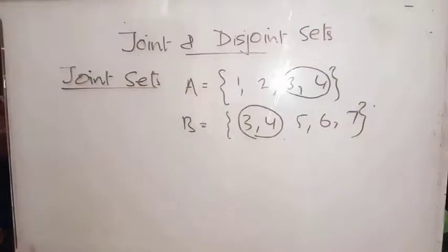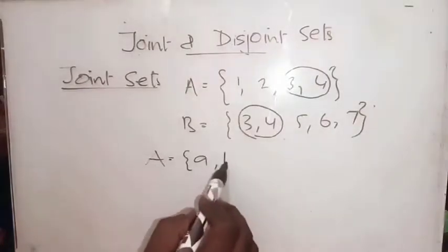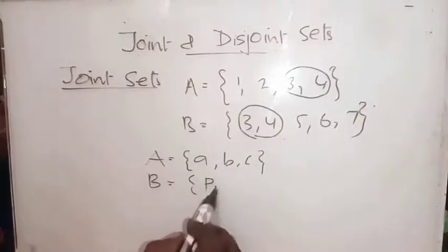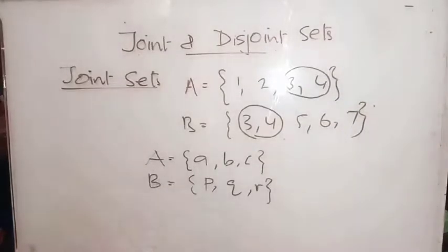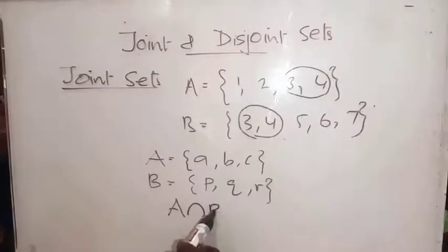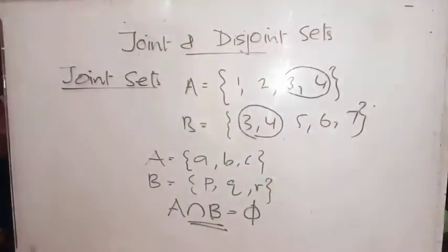If two sets do not have anything in common, they are called disjoint sets. For example, if A = {A, B, C} and B = {P, Q, R}, you don't find anything common between them. That means the intersection of A and B is the null set — nothing is common. Such sets are known as disjoint sets.